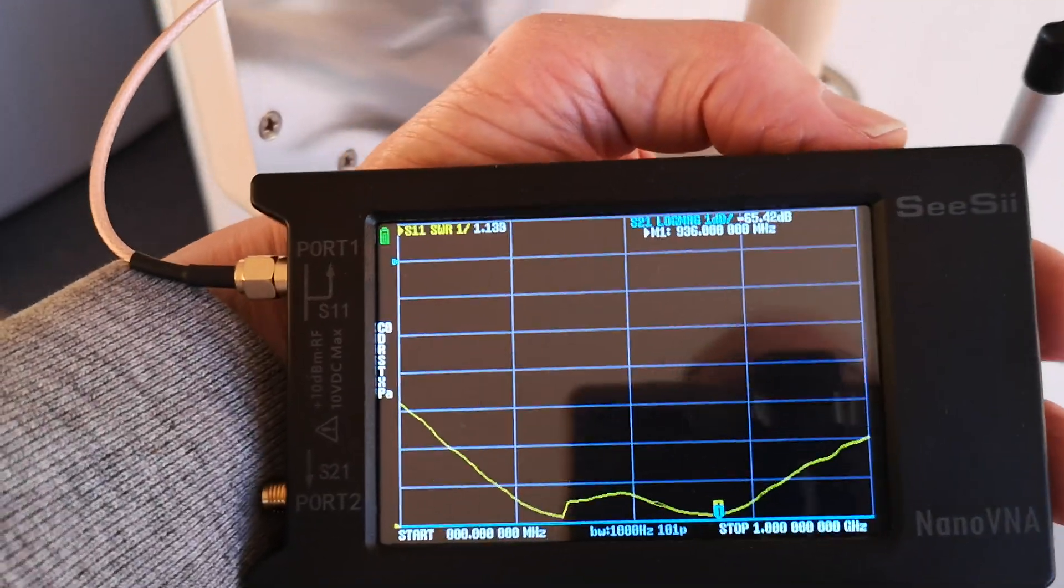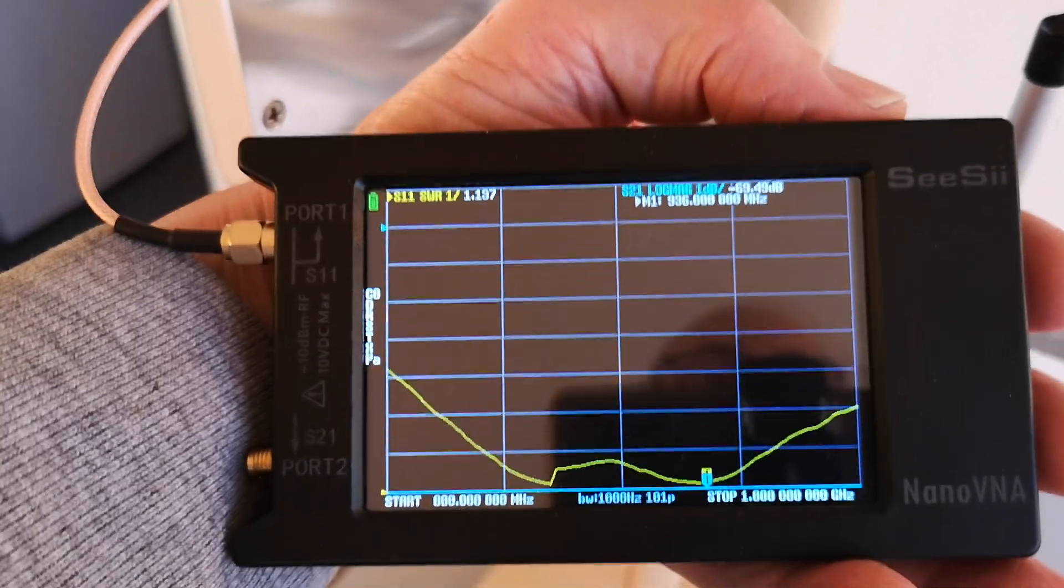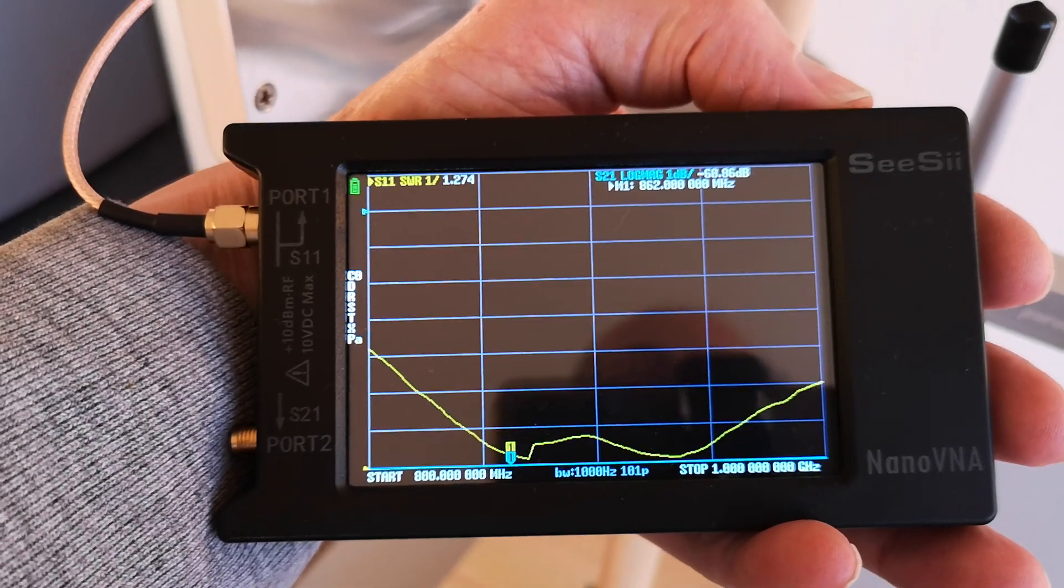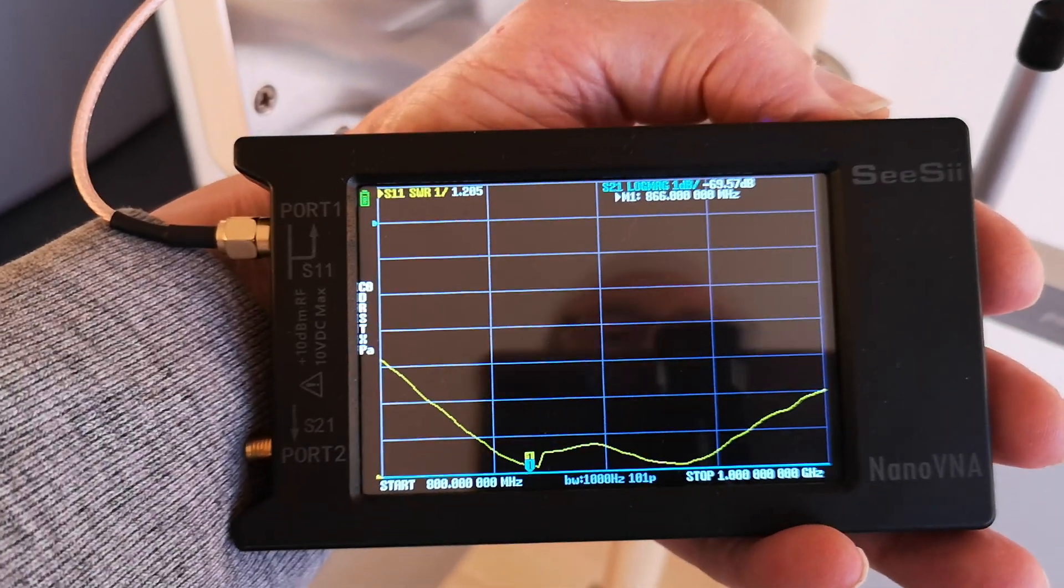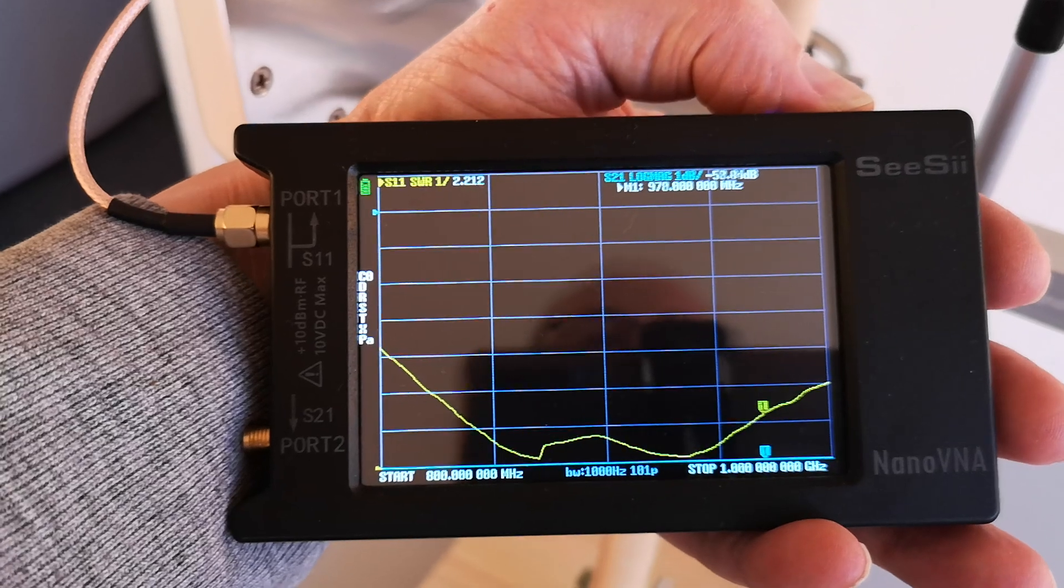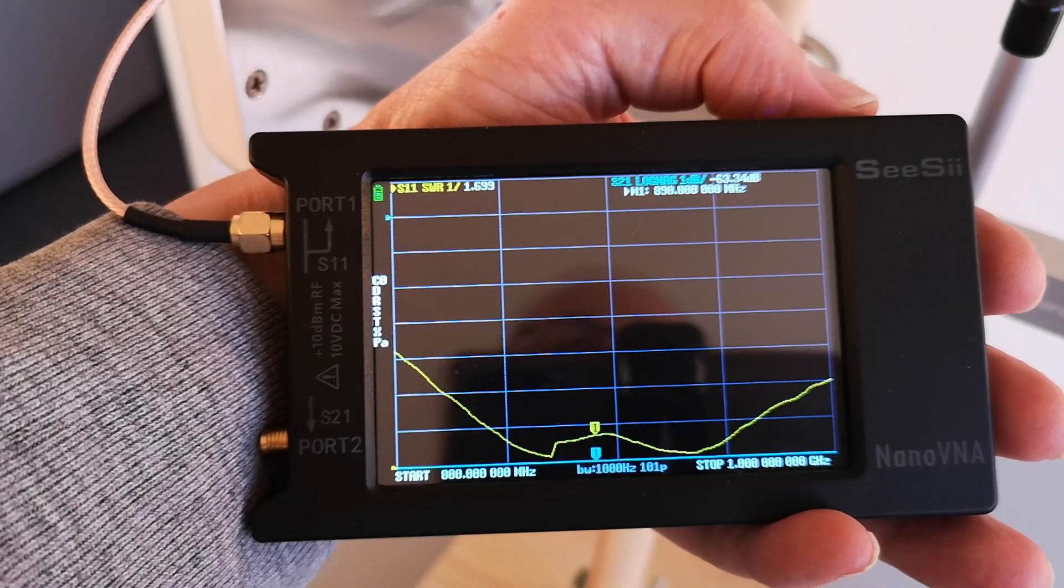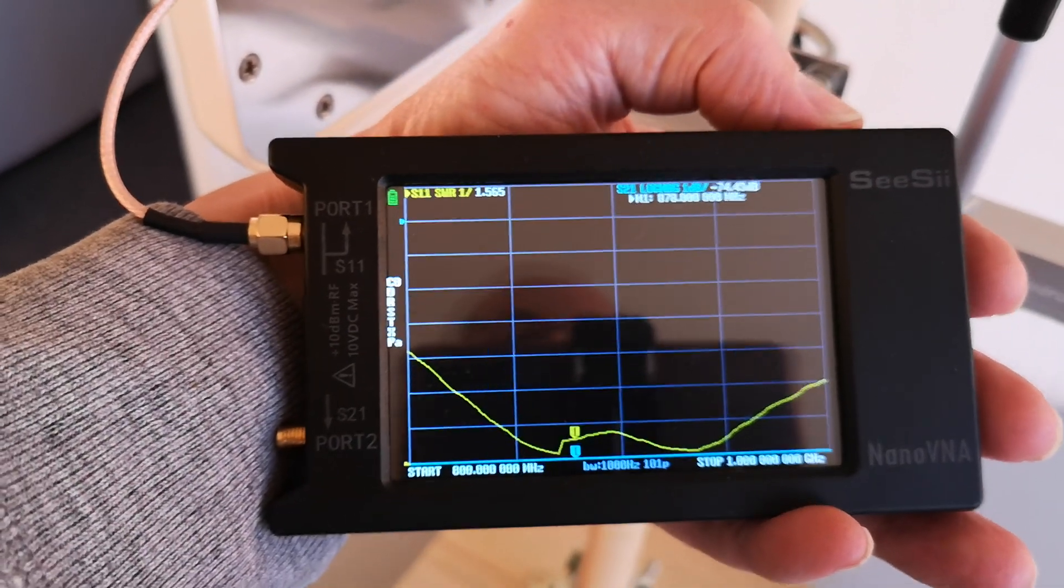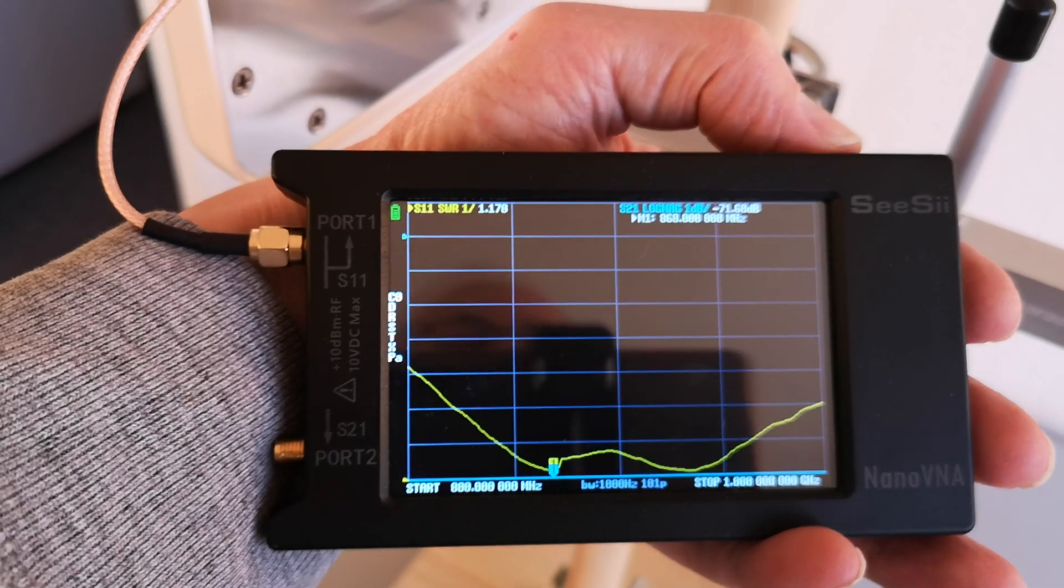This is the US frequency that's being used for LoRa. So it may be that this antenna is actually designed to work in the EU and in the US because it's got these two nice matching points. But we're interested in this. You notice there's a sort of a nick in the curve there. I'm not quite sure why that is.